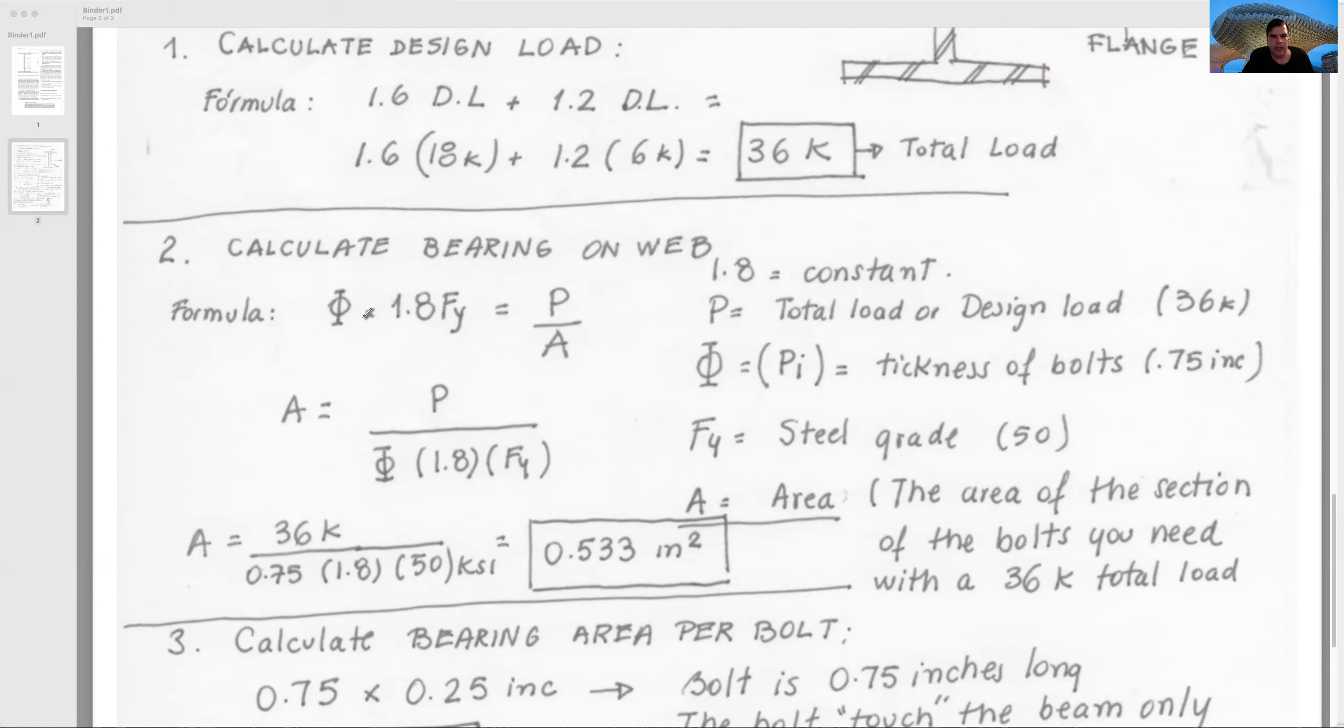There is a formula for this: P, that is the thickness of the bolt, multiplied by a constant that is 1.8, multiplied by Fy, multiplied by P that is the load divided by the area. We want to know how much is the area because, as I explained, we want the area that that bolt is able to support. This is the area, this is the bolt. The bolt can be much longer, but only this distance of the bolt is the one that is supporting the web element. We need the area, so we take out from the formula the area.